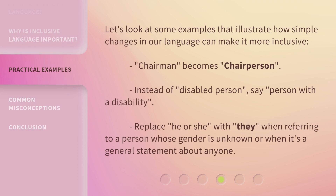Let's look at some examples that illustrate how simple changes in our language can make it more inclusive. 'Chairman' becomes 'chairperson.' Instead of 'disabled person,' say 'person with a disability.' Replace 'he or she' with 'they' when referring to a person whose gender is unknown or when making a general statement about anyone.